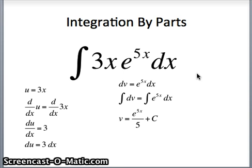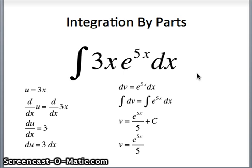The fact of the matter is, we just need one v. So we're going to choose c to equal 0 so that v will be e to the 5x over 5. If you chose a different c, it really wouldn't matter. But it's tradition to use c equals 0 for this sort of strategy.